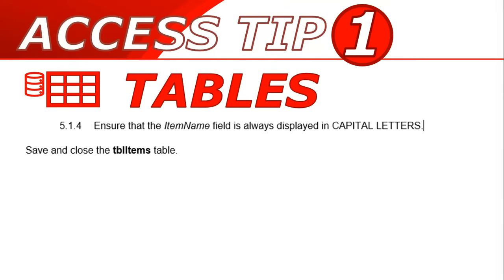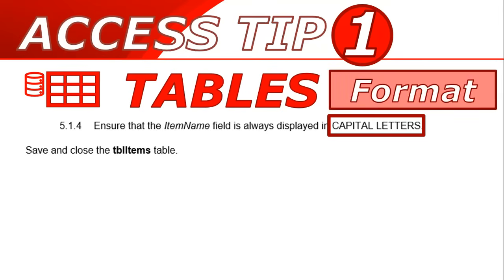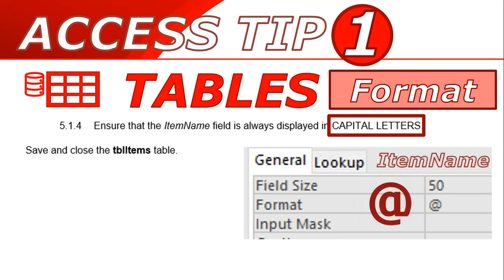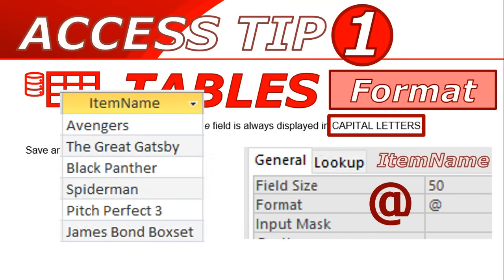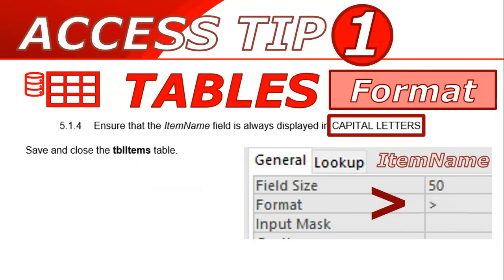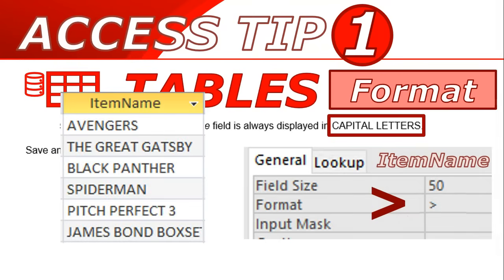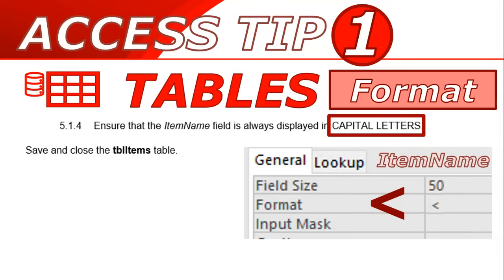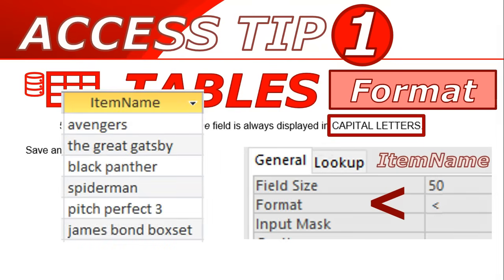Another tip for tables: they may ask you to change a field to be in capital letters, or maybe small letters. This is a very confusing question and it relates to the format of the field. When you go to item name, you'll see the format is currently at symbol, which means displayed as-is. If you want capital letters, change the format to a greater-than symbol — that changes all text to uppercase. If you want small letters, use a less-than symbol to change all text to lowercase.